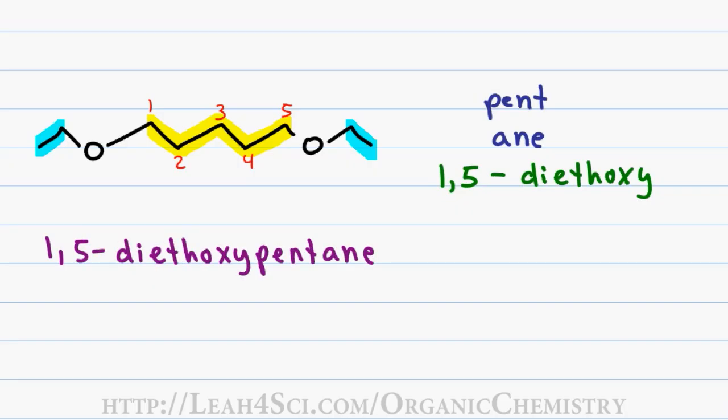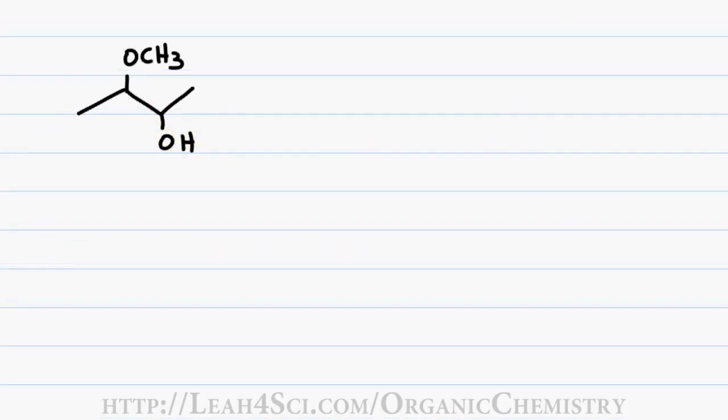When you have an alcohol and ether on the same molecule, the OH group takes priority. In this case, the molecule is numbered so that OH rather than OCH3 gets a lower number, which means I have to number from the right. 4 carbons gives me a first name of bute, only single bonds gives me a last name of ane. Since the alcohol is higher priority, I have a functional group of 2-ol. The ether is my substituent giving me 3-methoxy.